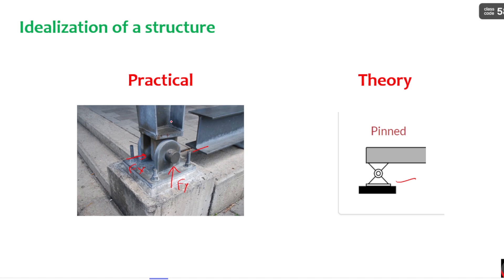In this pin support, whatever member you observe is allowed to rotate. If you observe the member carefully, pins are provided. The member is not allowed to move in the Y direction and it is not allowed to move in the X direction. This movement is called translation. Whenever there is a restraint in the translation of the member at the support, there is going to be development of a reaction at that place. There is no restraint for rotation, so there is no development of moment. There is a development of reaction in the Y direction and also the X direction.